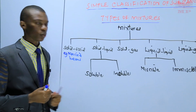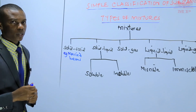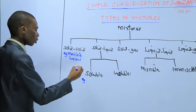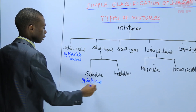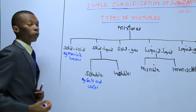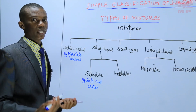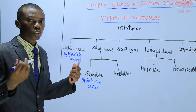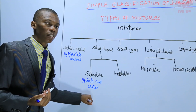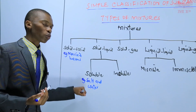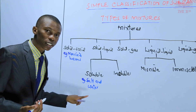For the solid-liquid mixture, this can be categorized into soluble and insoluble. An example of a soluble solid-liquid mixture is salt and water. When you put salt in water and stir, salt dissolves in water forming a salt solution. Salt is a solid, water is a liquid, so you form a soluble solid-liquid mixture — in this case, a salt solution.